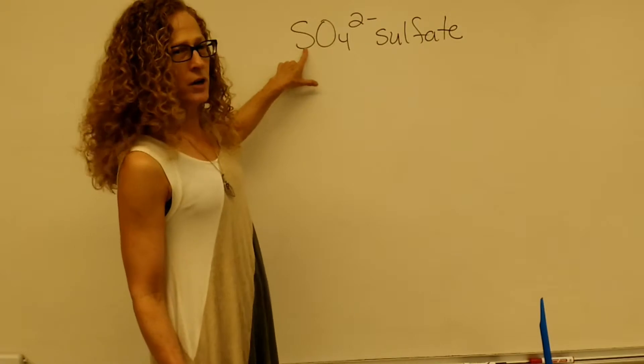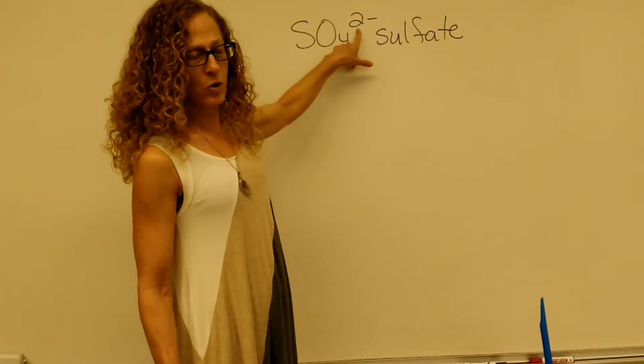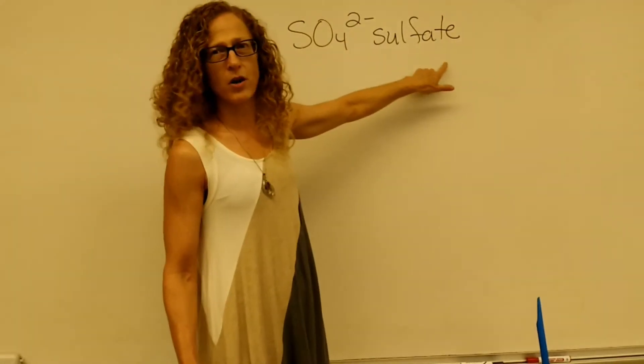This means you have a sulfur, four oxygens, and the total thing is a charge, the total ion is a charge of negative 2, and it's called sulfate.